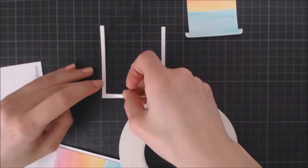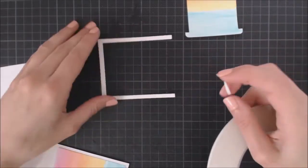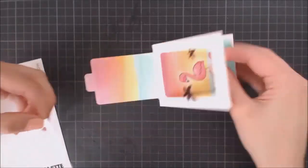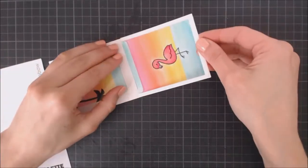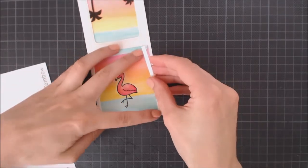Now, I have this U-shaped piece, and I'm going to put double-sided adhesive tape on both sides and adhere it to my pocket, using the tab as a guide for a perfect placement. This piece is going to keep the slider tab in place while we use the slider mechanism.